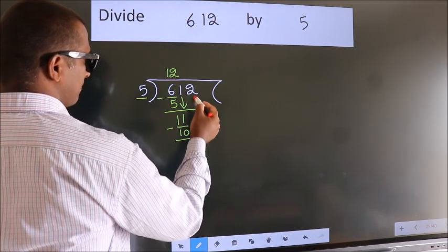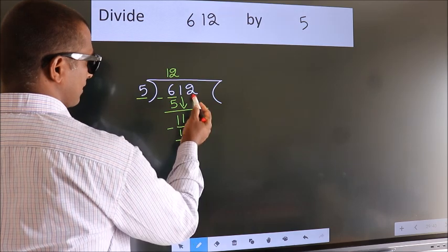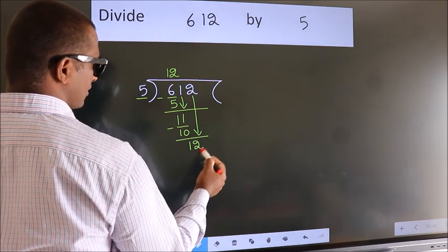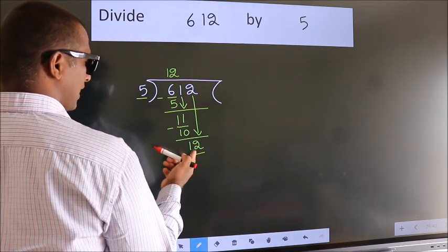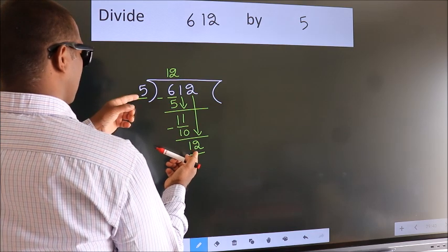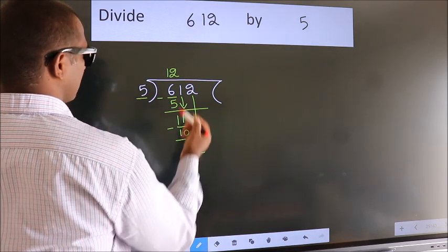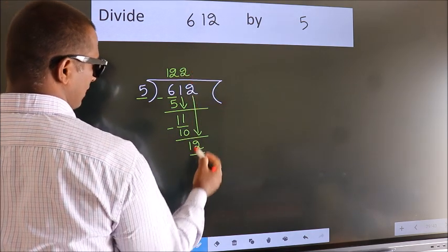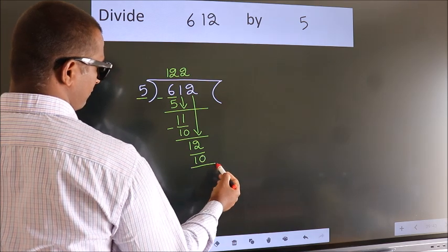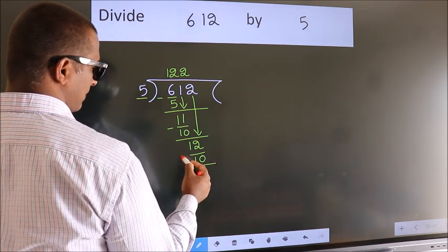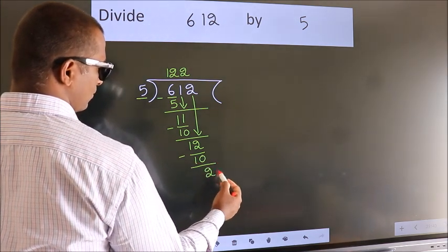After this, bring down the beside number. So, 2 down. So, 12. A number close to 12 in the 5 table is 5 twos 10. Now, we subtract. We get 2.